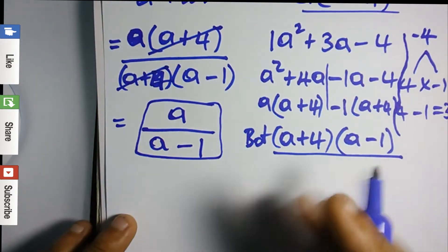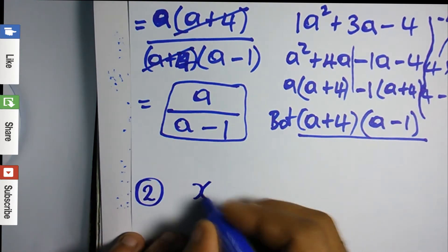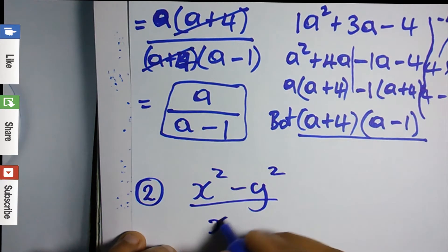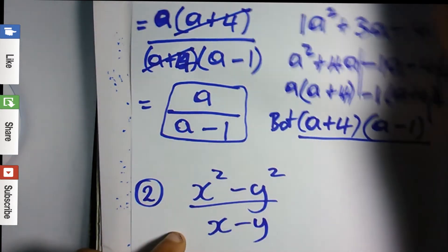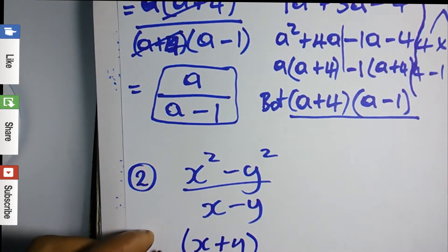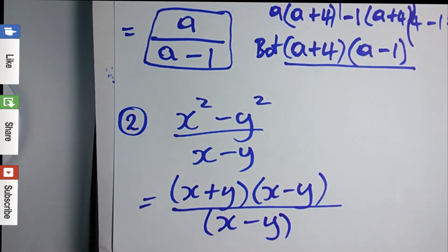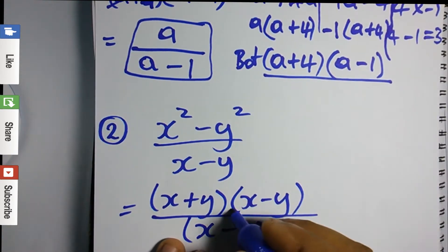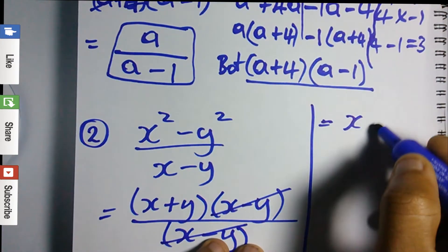For question two, let's say we have x squared minus y squared over x minus y. Looking at the top section, you realize this is a difference of two squares, so the factorized form is x plus y times x minus y, divided by x minus y. Since the top is separated by a multiplication sign, we can cancel x minus y with x minus y on the bottom, leaving us with x plus y as our result.